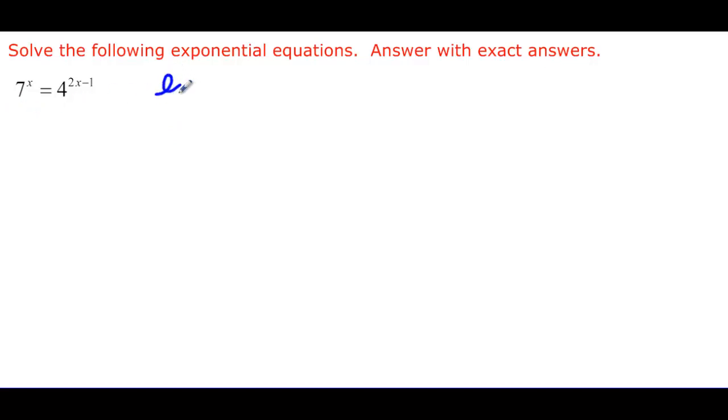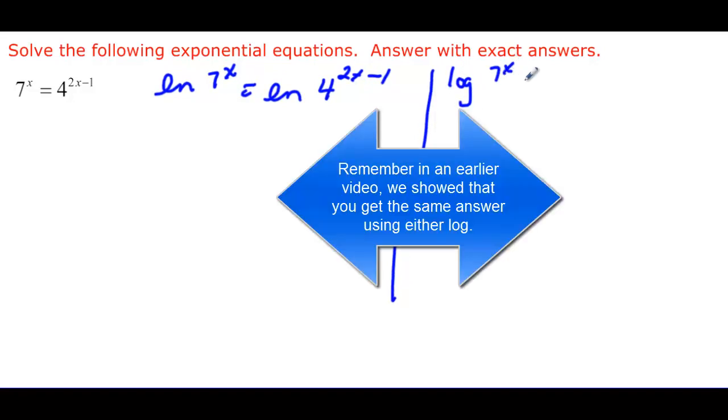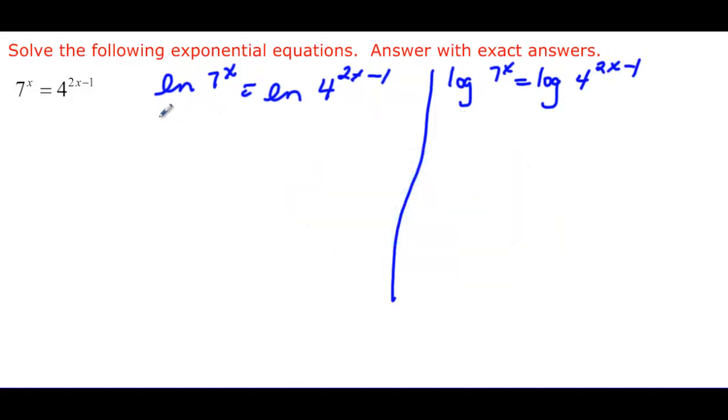And we can take a log or a natural log. Some people like to set it up as ln 7^x is equal to ln 4^(2x-1). And some people would rather do it as the log of 7^x is equal to the log of 4^(2x-1). Doesn't matter which method you use. Some people like to just use ln and then when they get to e they don't forget. So let's just do this one with an ln.